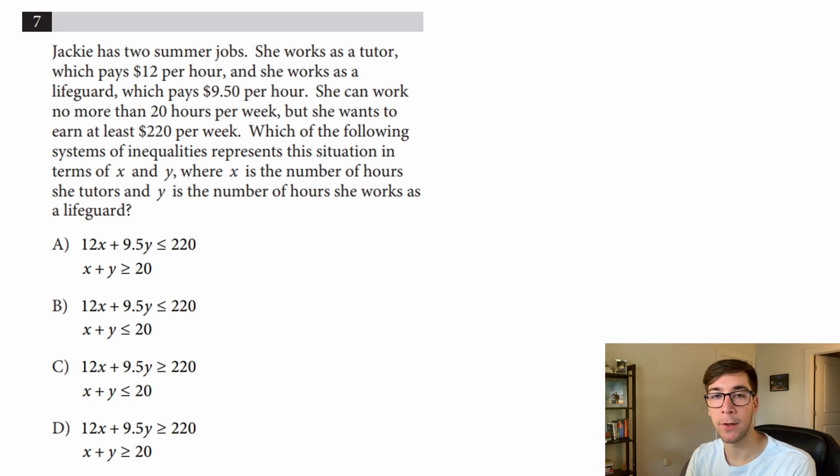Here's everything you need to know about systems of inequalities on the SAT in one problem. The problem says Jackie has two summer jobs. She works as a tutor which pays $12 per hour, and she works as a lifeguard which pays $9.50 per hour. She can work no more than 20 hours per week, but she wants to earn at least $220 per week. Which of the following systems of inequalities represents the situation in terms of x and y, where x is the number of hours she tutors and y is the number of hours she works as a lifeguard?